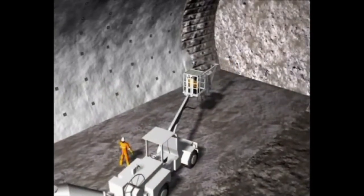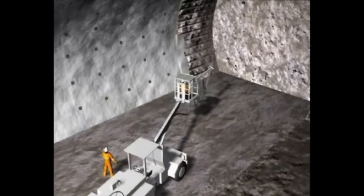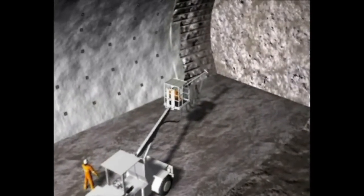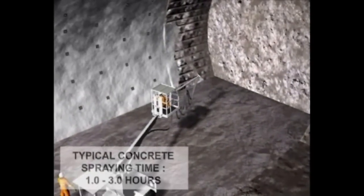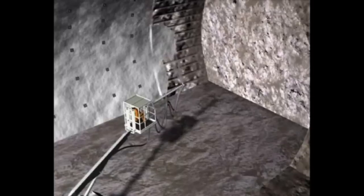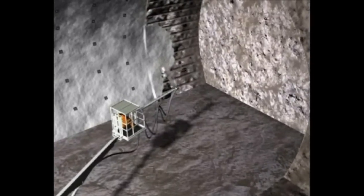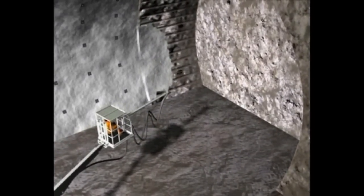Spraying — a shotcrete machine will spray suitable designed mixed concrete to the rock mass to seal off and to make the surface smooth.